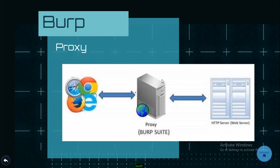When we say proxy, it is at the application level, or it can be a physical server. You can use an HTTP proxy or SOCKS proxy. Burp Suite is an application-level proxy — an application installed on the client machine. Your request goes through the application, and the server is on the other side.